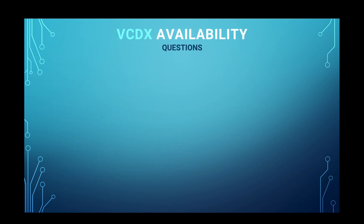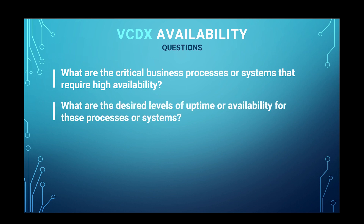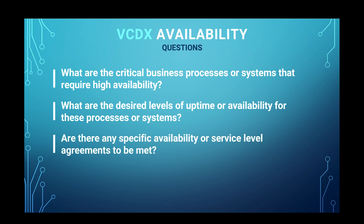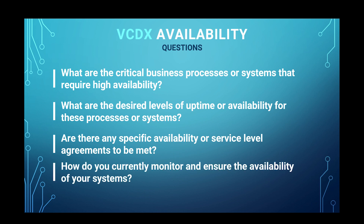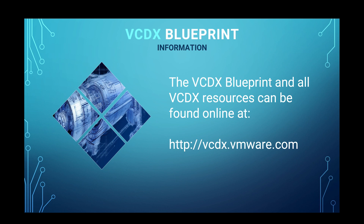And from an availability perspective: What are the critical business processes or systems that require high availability — and are we talking about high availability from an application perspective or from an infrastructure perspective? What are the desired levels of uptime or availability for these processes or systems? Are there any specific availability or service level agreements to be met? And how are you currently monitoring to ensure the availability of your systems? These specific questions will help you delve into the specific aspects covered by the VCDX blueprint.